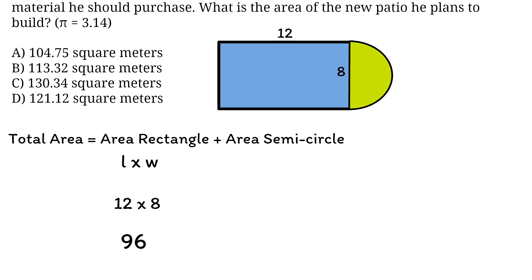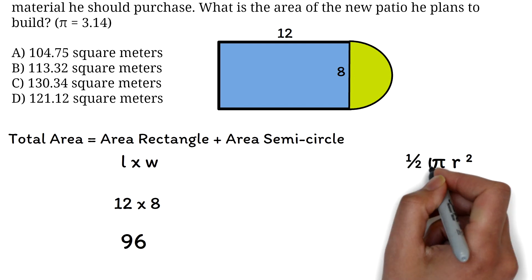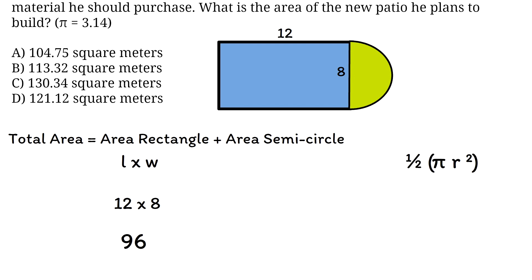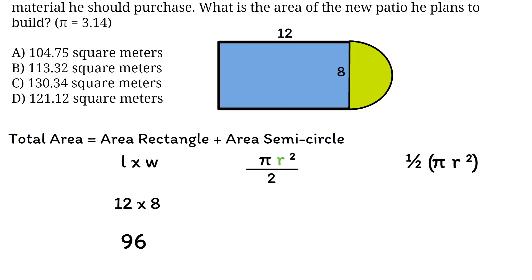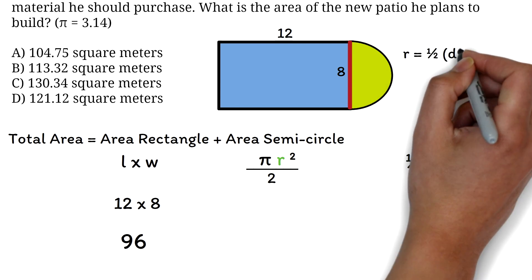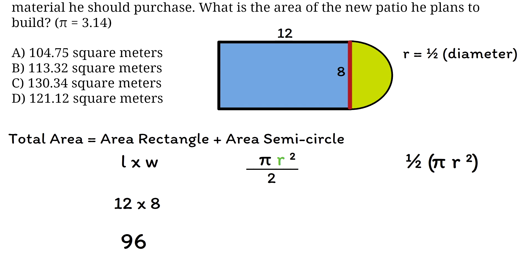Next, we calculate the area of the semicircle. A semicircle is half a circle, and the area of a circle is pi times the radius squared. Therefore, the area of a semicircle is pi r squared over 2. To find the area, we need the radius. The diameter of the semicircle equals the width of the rectangle, which is 8 meters. Since the radius is half the diameter, the radius is 4 meters.